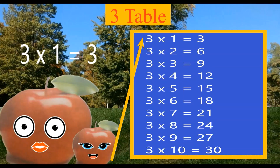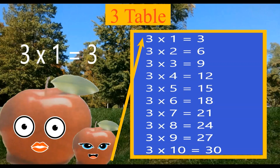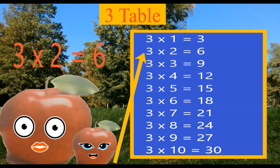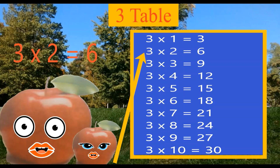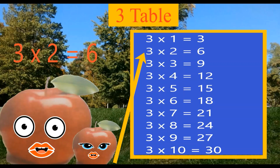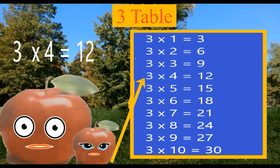Learning 3 table. Three ones are three. Three twos are six. Three threes are nine. Three fours are twelve.